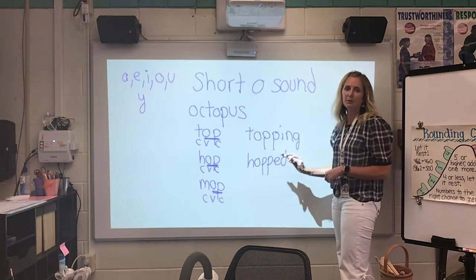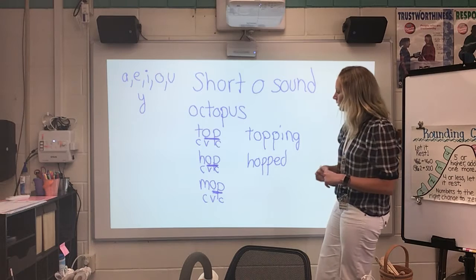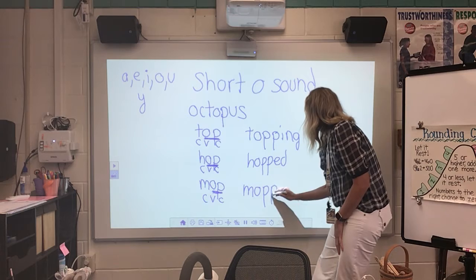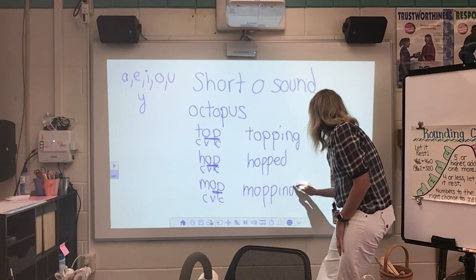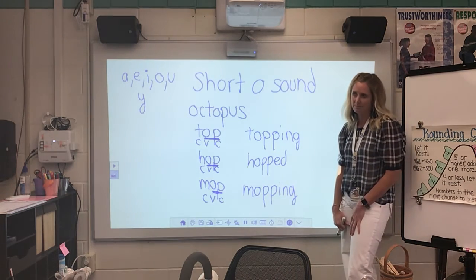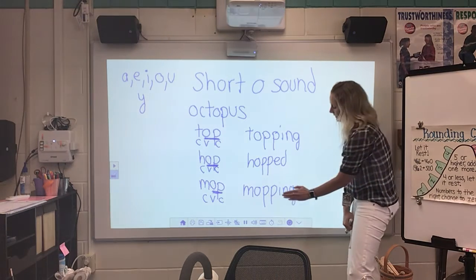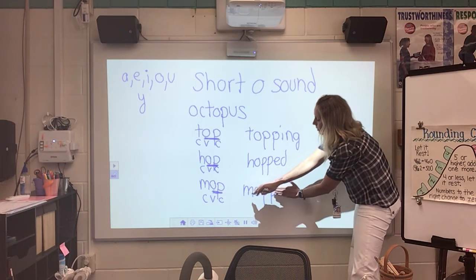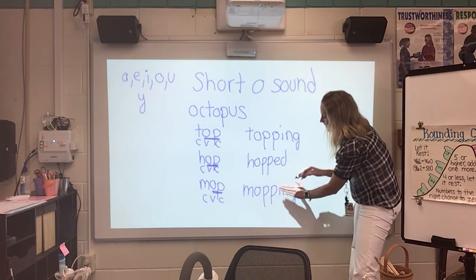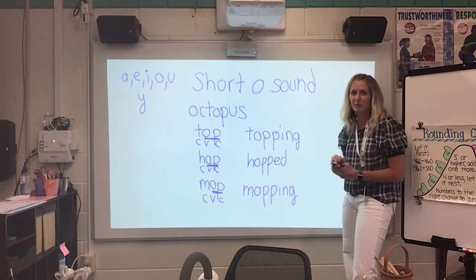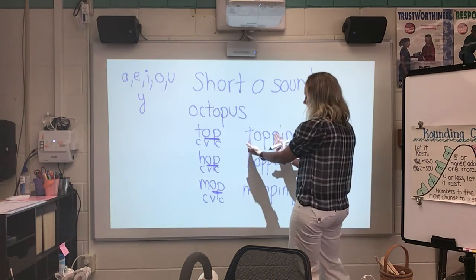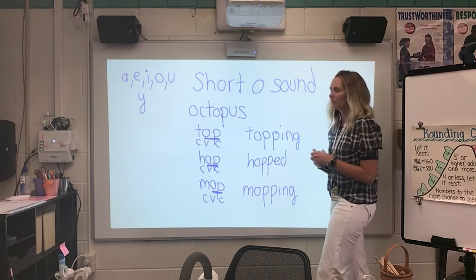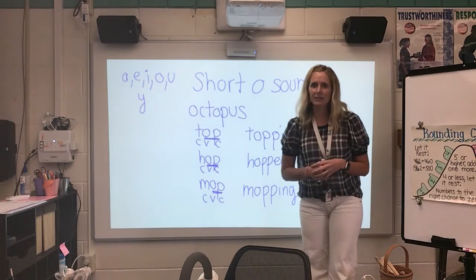Or maybe you see a big word and think it says 'moping,' but it doesn't. If I take away the ending and chunk it up to something I know, it says 'mop,' and then I put my ending on: mopping. That's how you read bigger words — if you can find the smaller word, you can just add on the endings that you know. Good luck, have fun with your game!